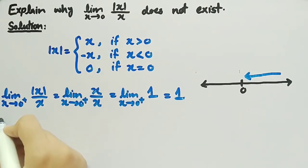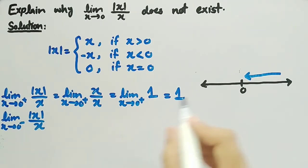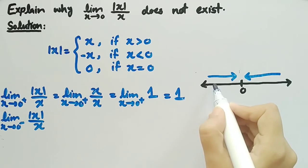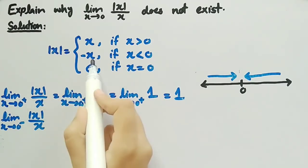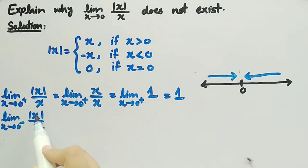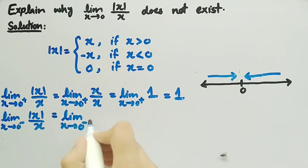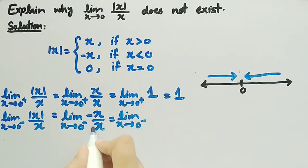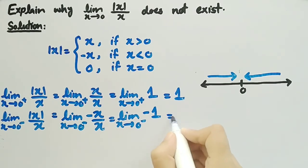Now we will find the left-hand limit of the given function. We write: limit as x approaches 0 from the left of mod(x) divided by x. Since x is approaching 0 from the left side, all values of x are less than 0. From the definition, when x is less than 0, mod(x) equals minus x. So we replace mod(x) by minus x, giving us the limit as x approaches 0 from the left of minus x divided by x, which equals minus 1. Since minus 1 is a constant, when we apply the limit it will be equal to minus 1.